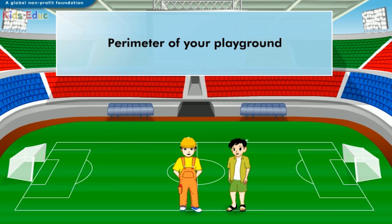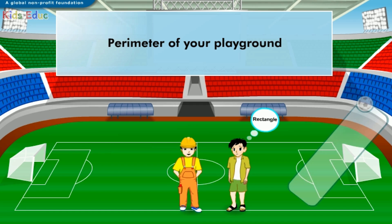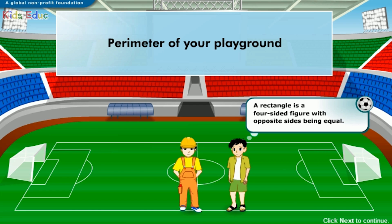Now that you're in the soccer field, can you guess its shape? Great! You guessed it right! The soccer field is a rectangle. A rectangle is a four-sided figure with opposite sides being equal.